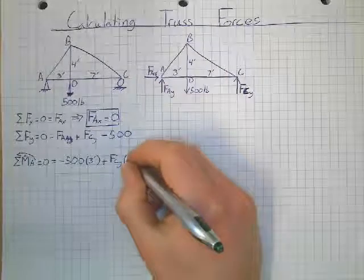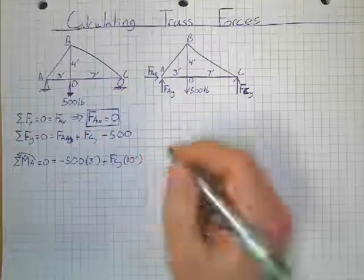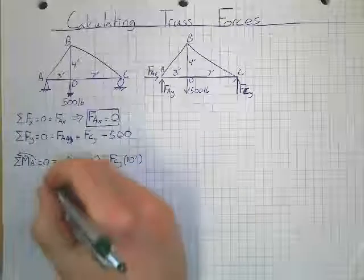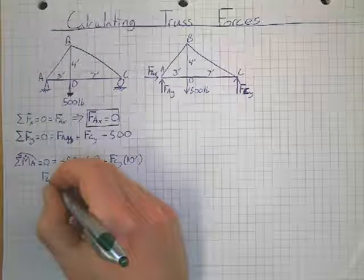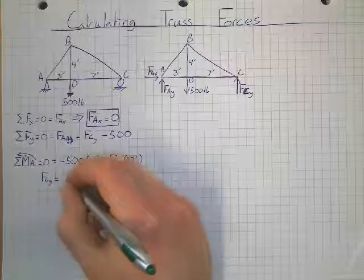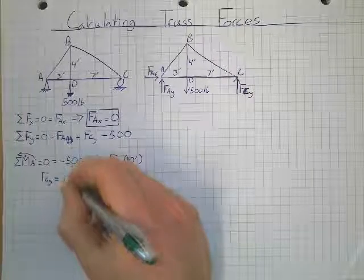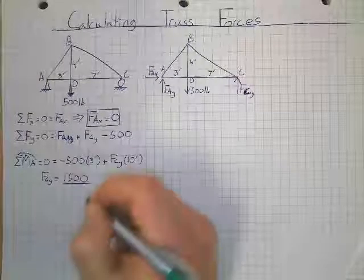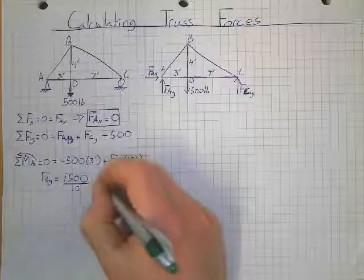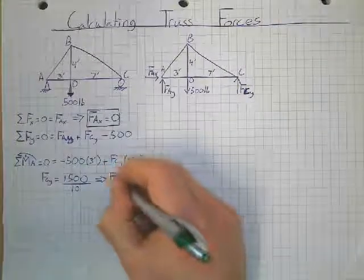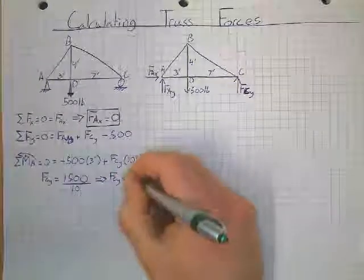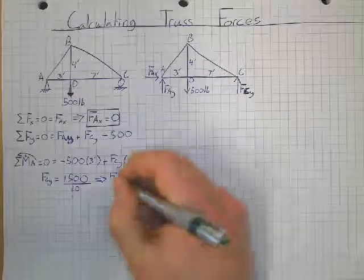So if I was solving, I would say FCY is equal to 1500 divided by 10. FCY is going to be equal to 150 pounds.